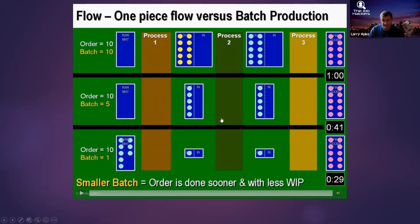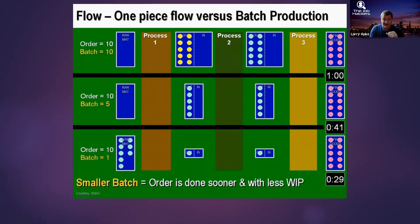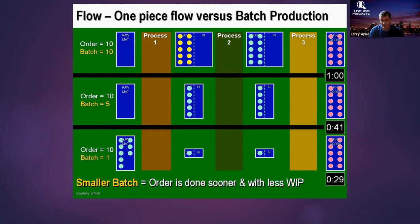Smaller batches are better, but there's a caveat. I'm a big fan of Buddhist philosophy — in Buddhism we talk about the middle path, because on the extremes we tend to have problems. One-piece flow is an extreme — the smallest possible batch size. Waterfall tends to be the other extreme — the largest possible batch size. Like most things in life, it's somewhere in the middle.